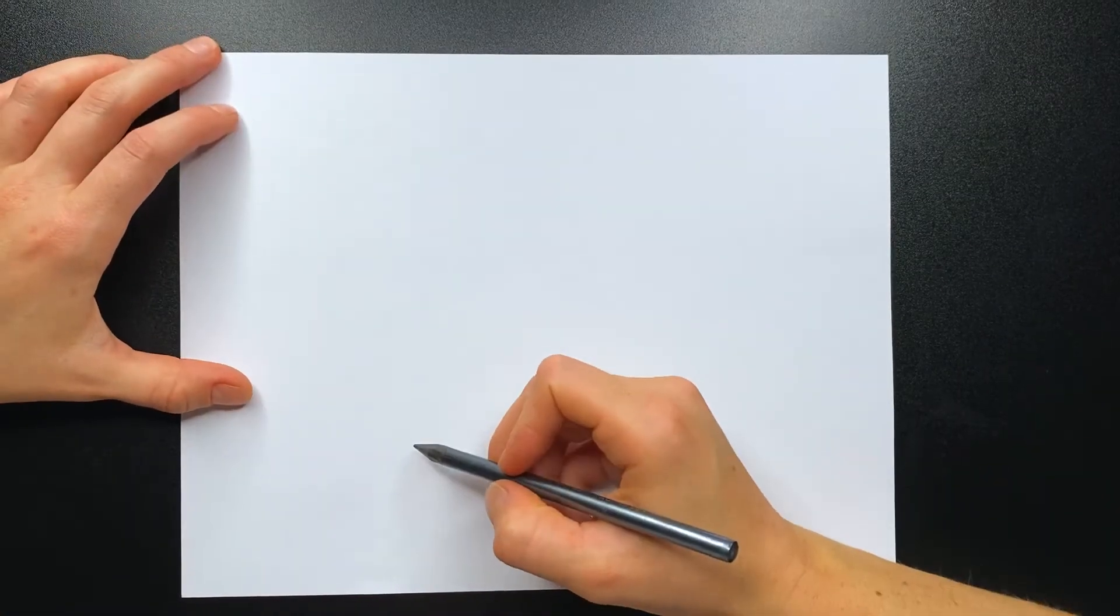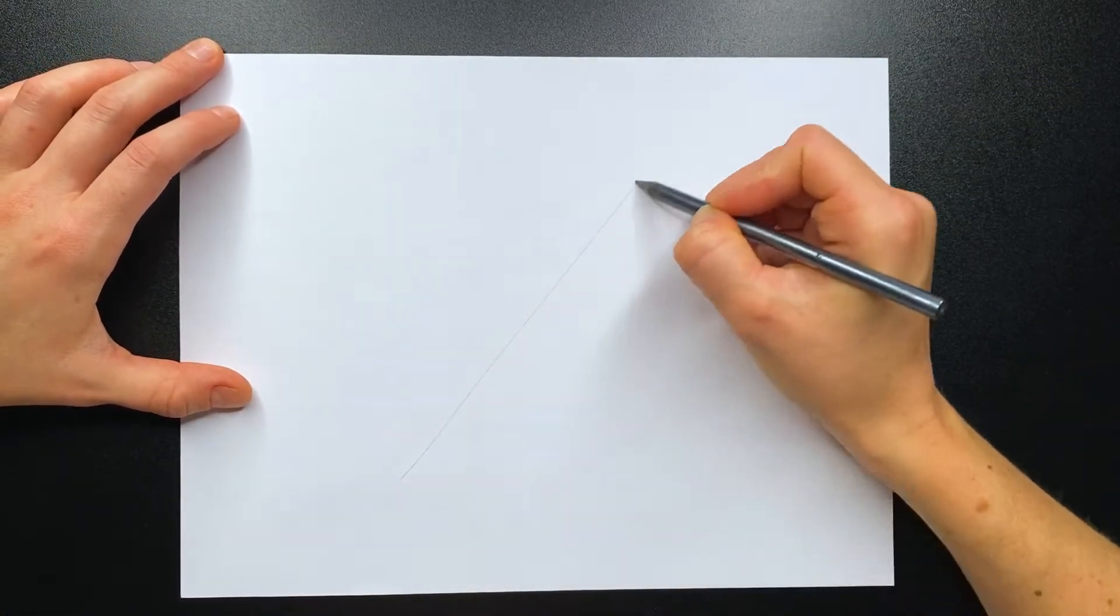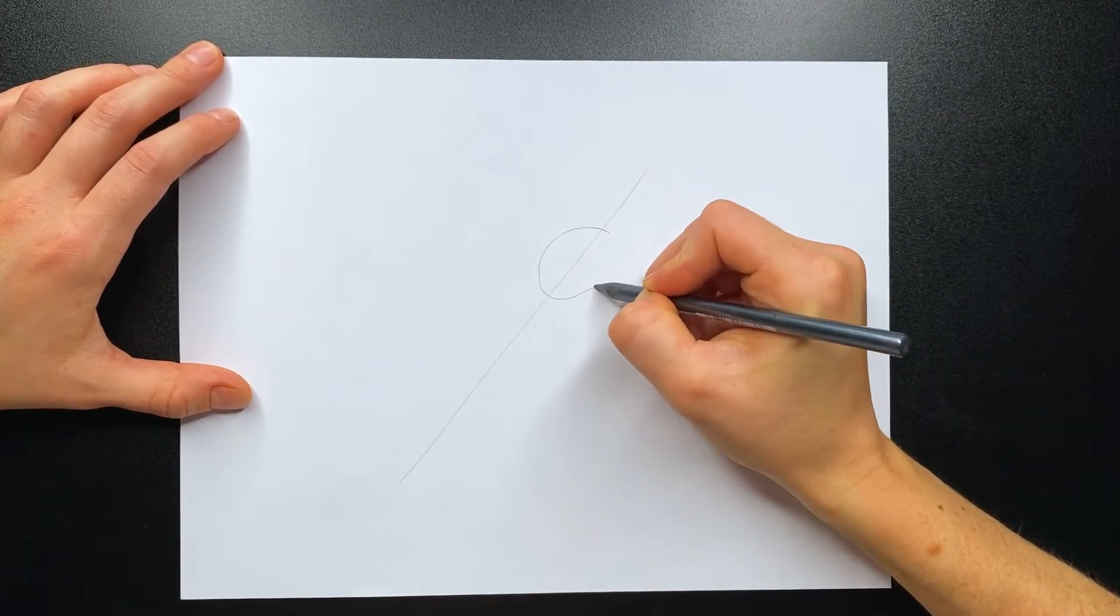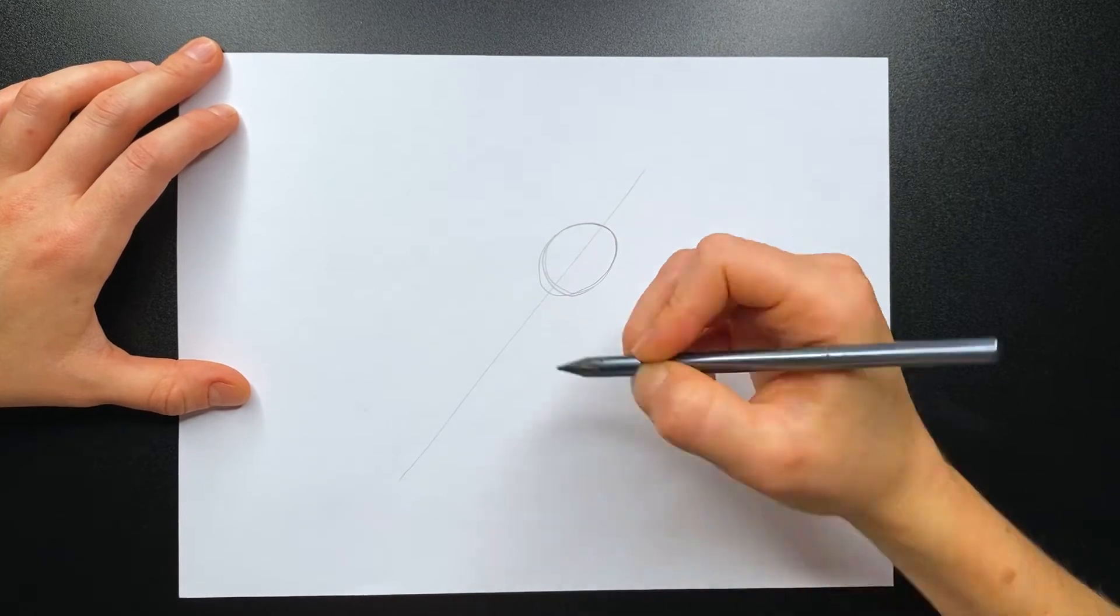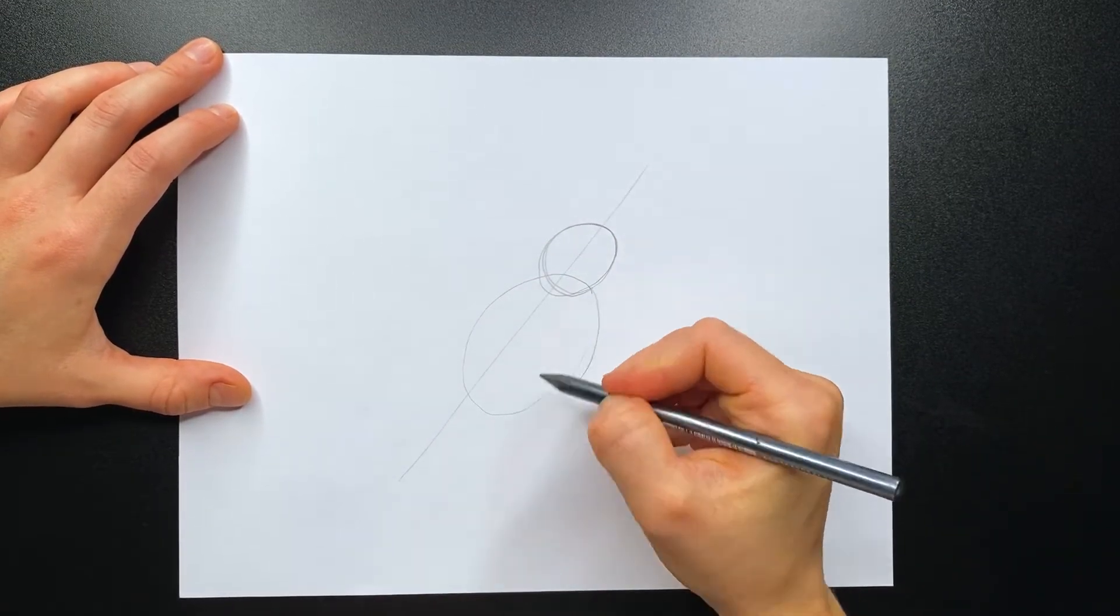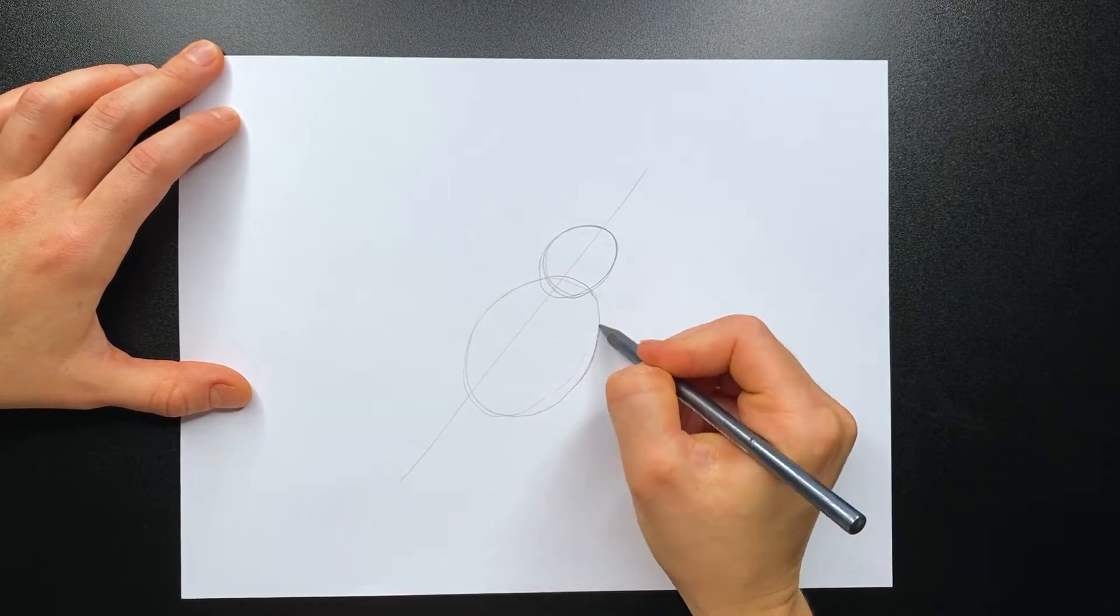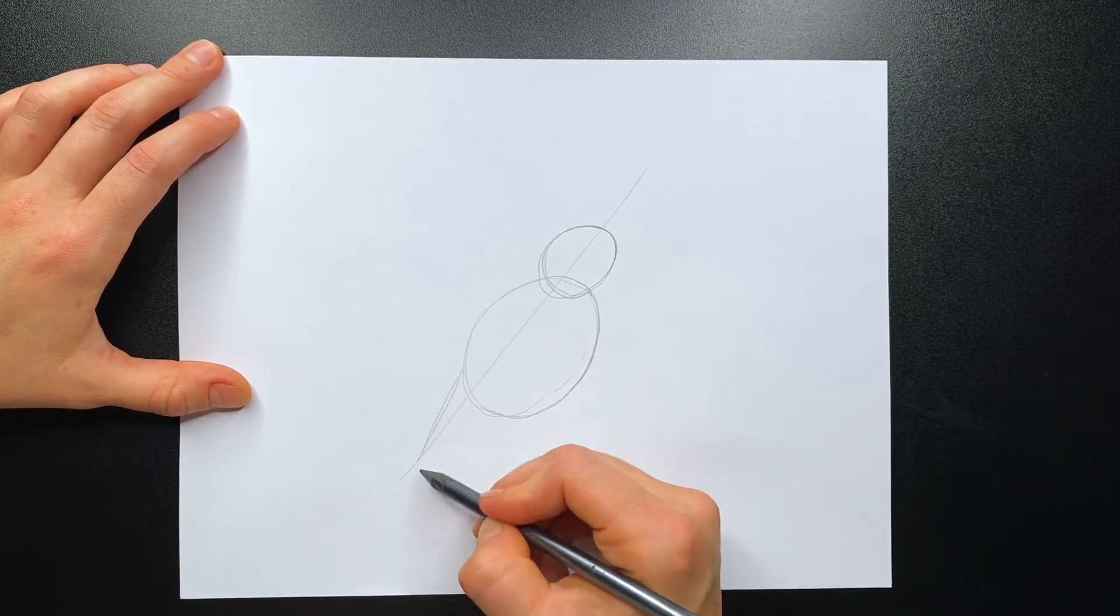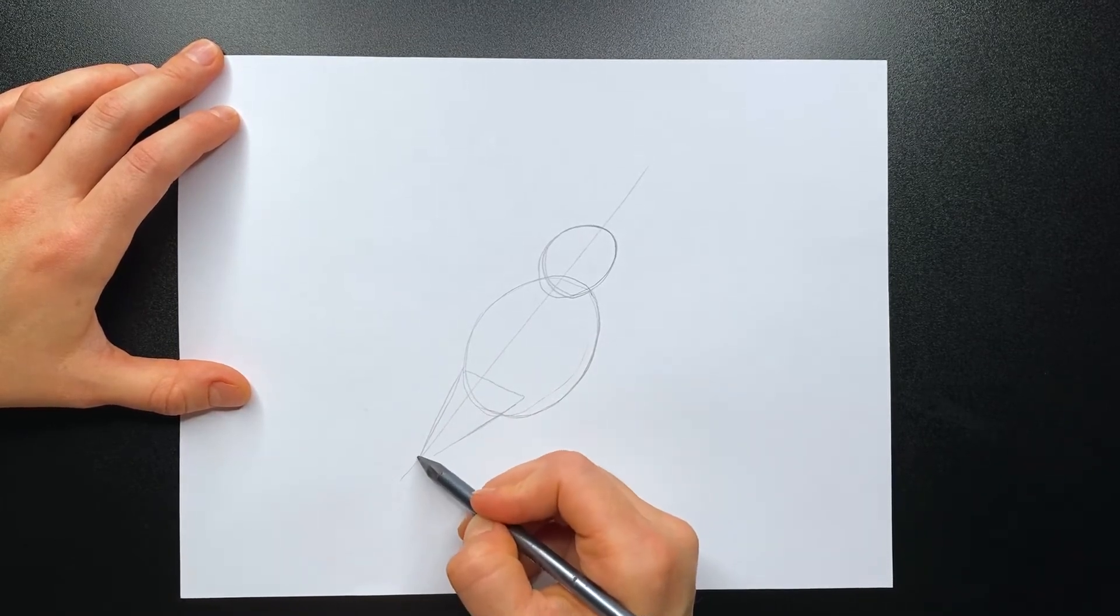Let's try this on paper using pencil. Draw the diagonal guideline first. Then we sketch the position and shape of the bird's head. Then we draw the body of the bird, and it's roughly two times bigger than the head. Keep that in mind when you get to this step. Then we draw the tail, making sure that all shapes are positioned on our guideline.